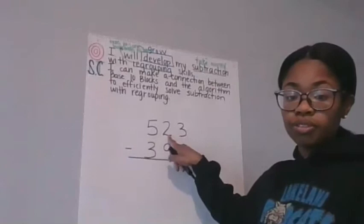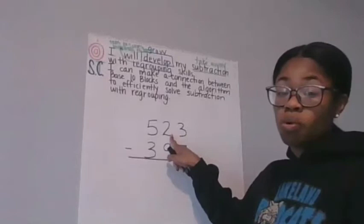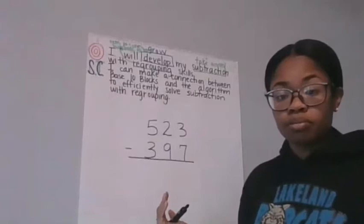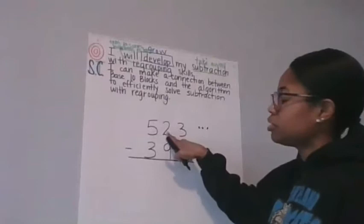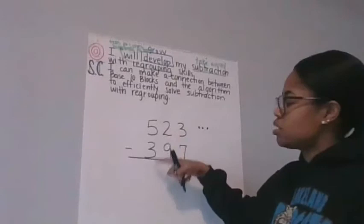So I'm going to go over to the tens place, and I'm going to regroup one of those tens. But I don't understand, Ms. Sutton. What do you mean regroup? Well, let's draw it out. So I have three ones. I need to take away seven. I don't have enough. So I'm going to go to the tens place, and I'm going to regroup some of those tens.